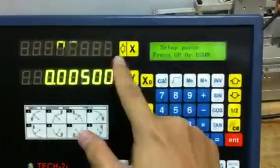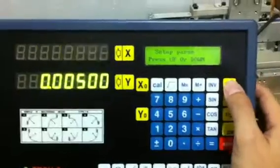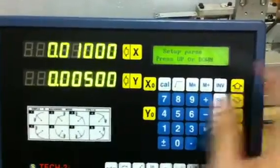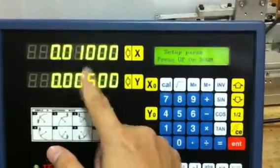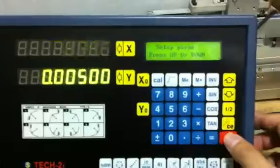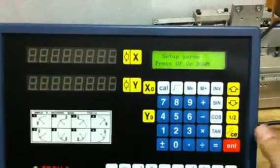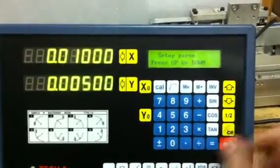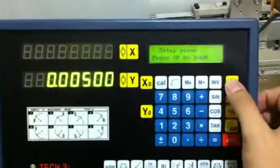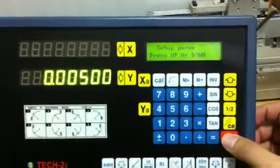Just select the axis you want and use the arrow up and down key until you get the desired resolution counting, and then you press enter. To change it again, enter, X, enter.